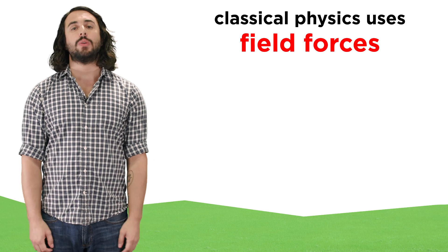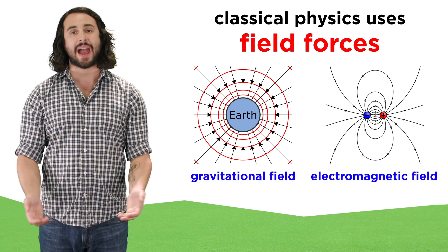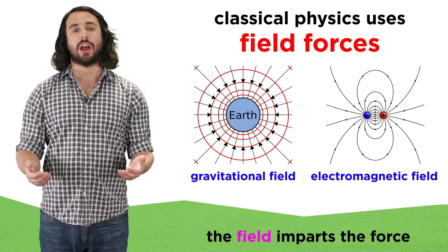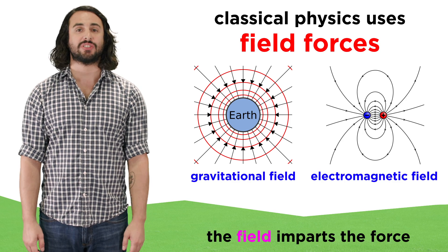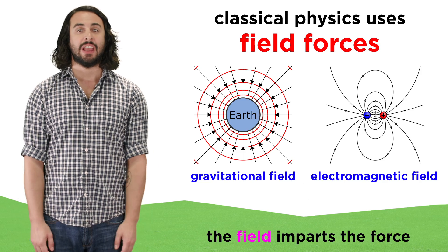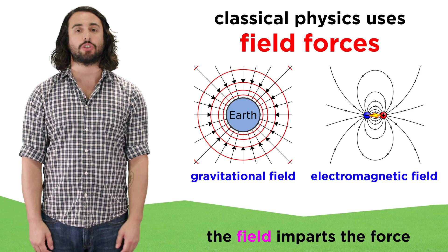In classical physics we became aware of field forces like gravity and electromagnetism. These are forces whereby a gravitational or electromagnetic field imparts force onto some object which generates an acceleration in that object, like a rock falling to the earth or the attraction and repulsion between charged particles.